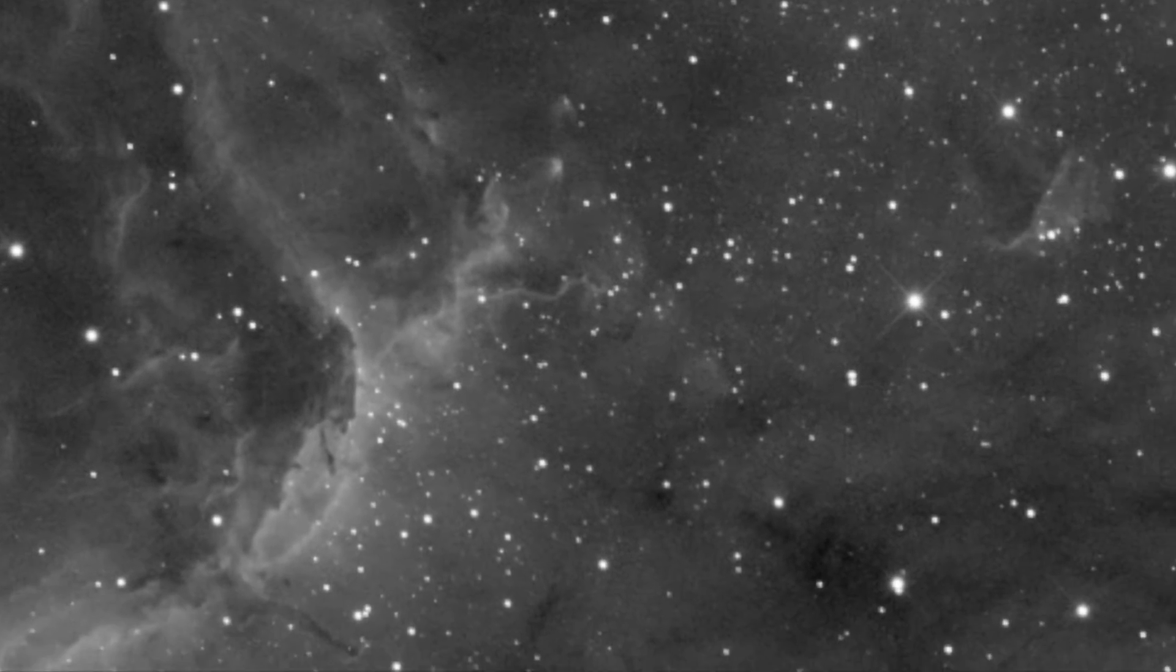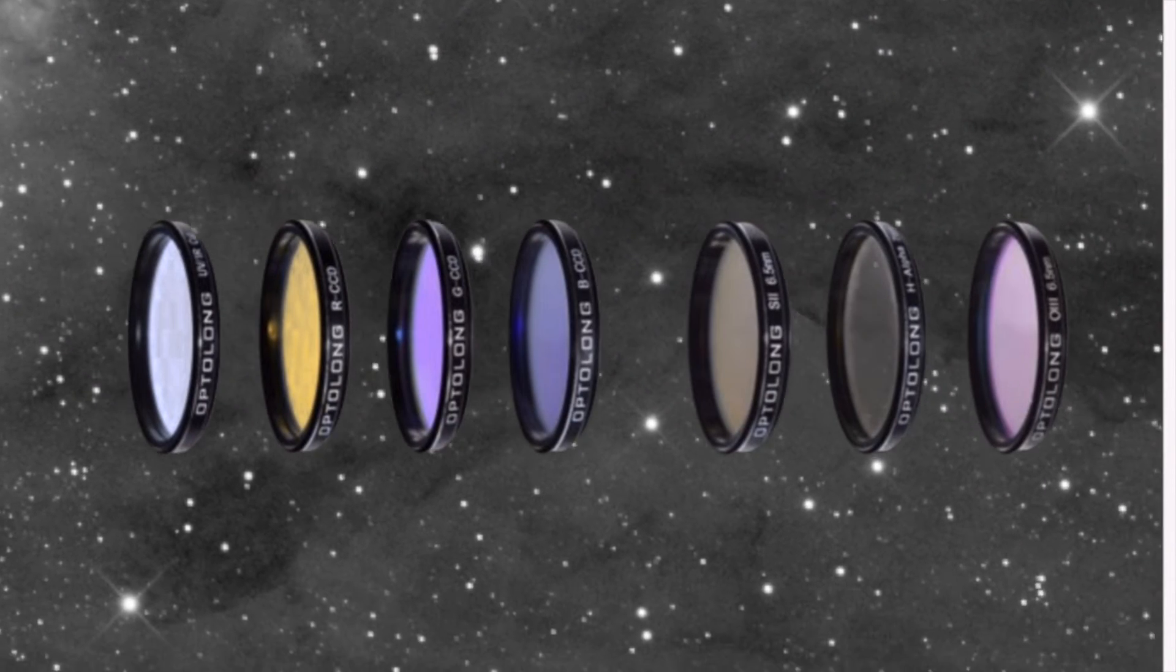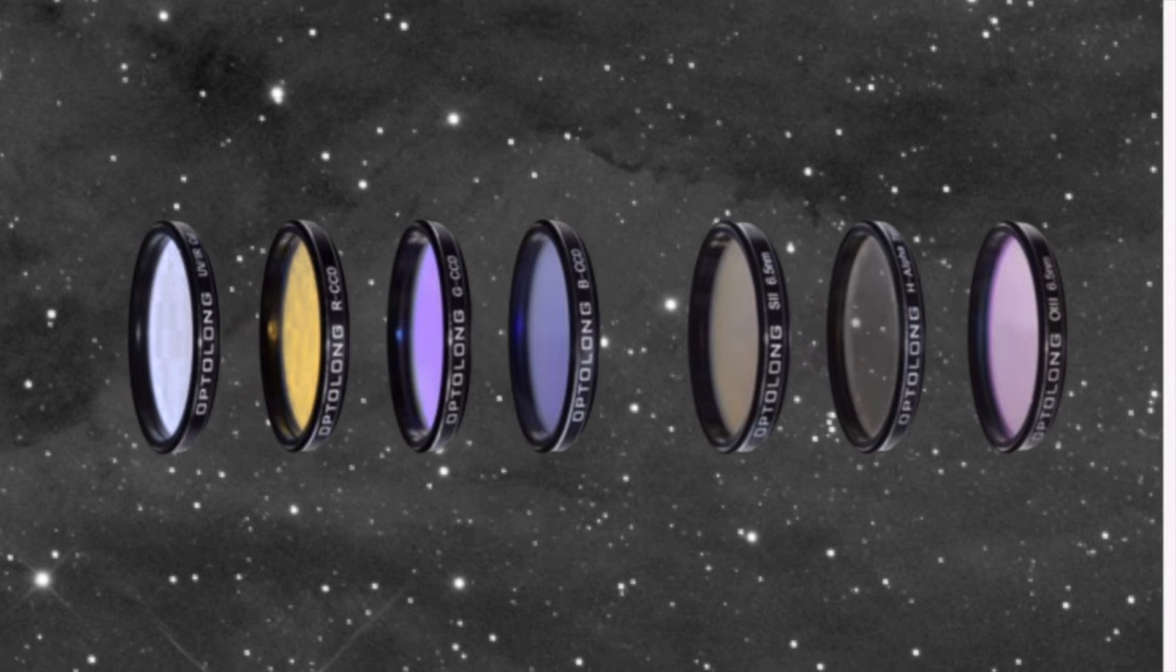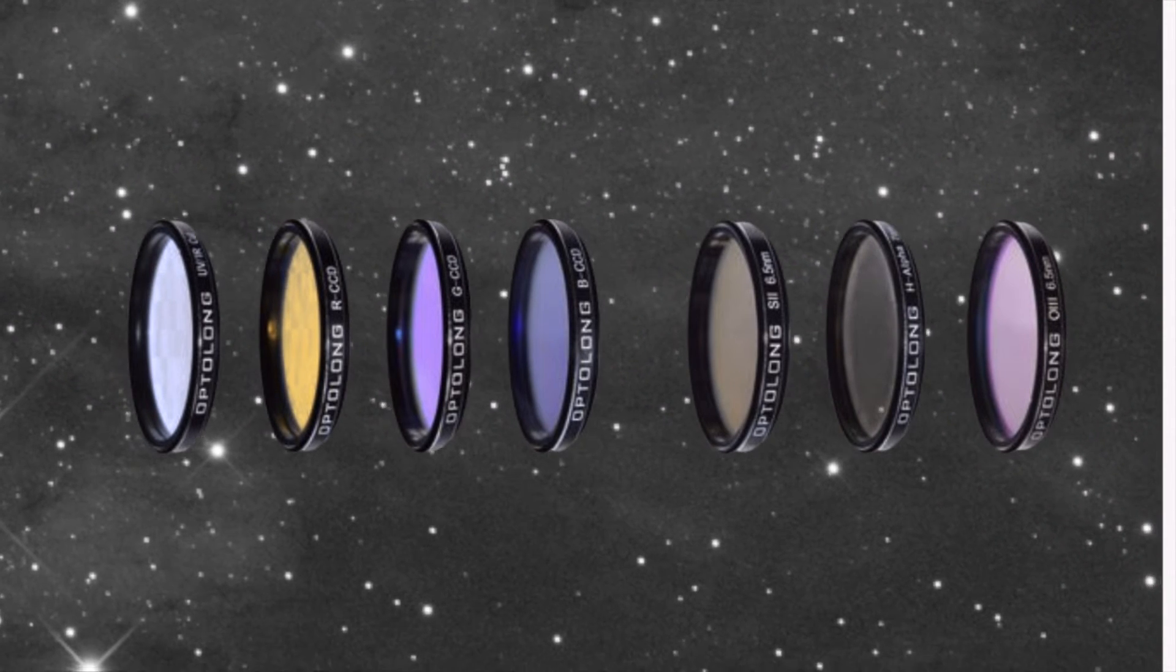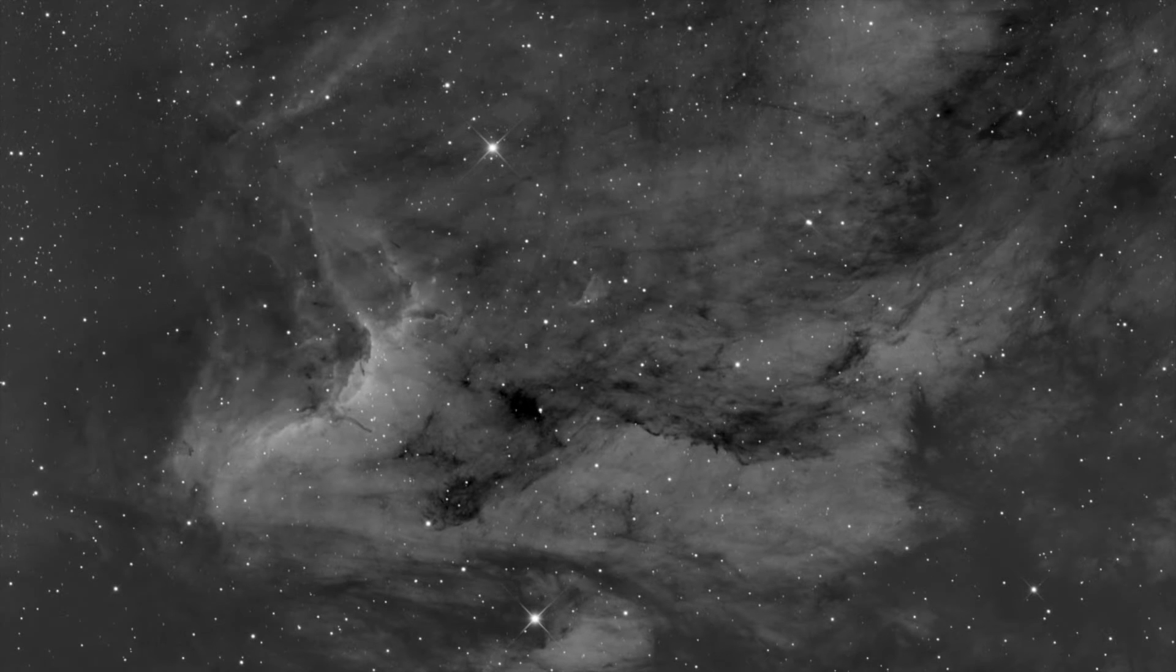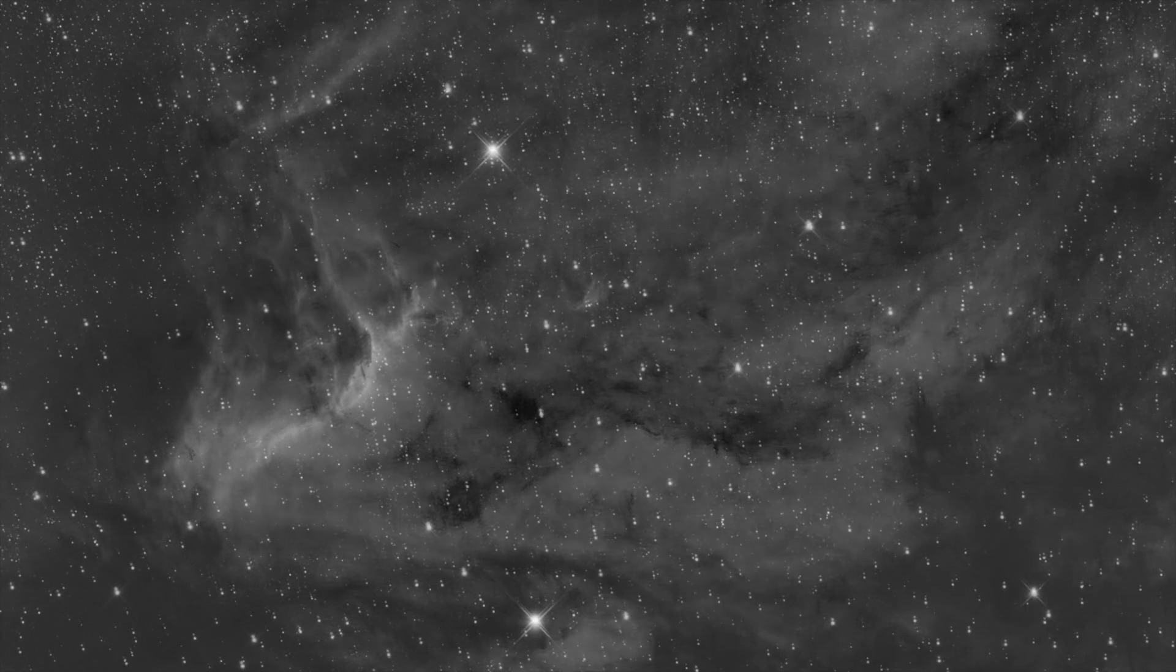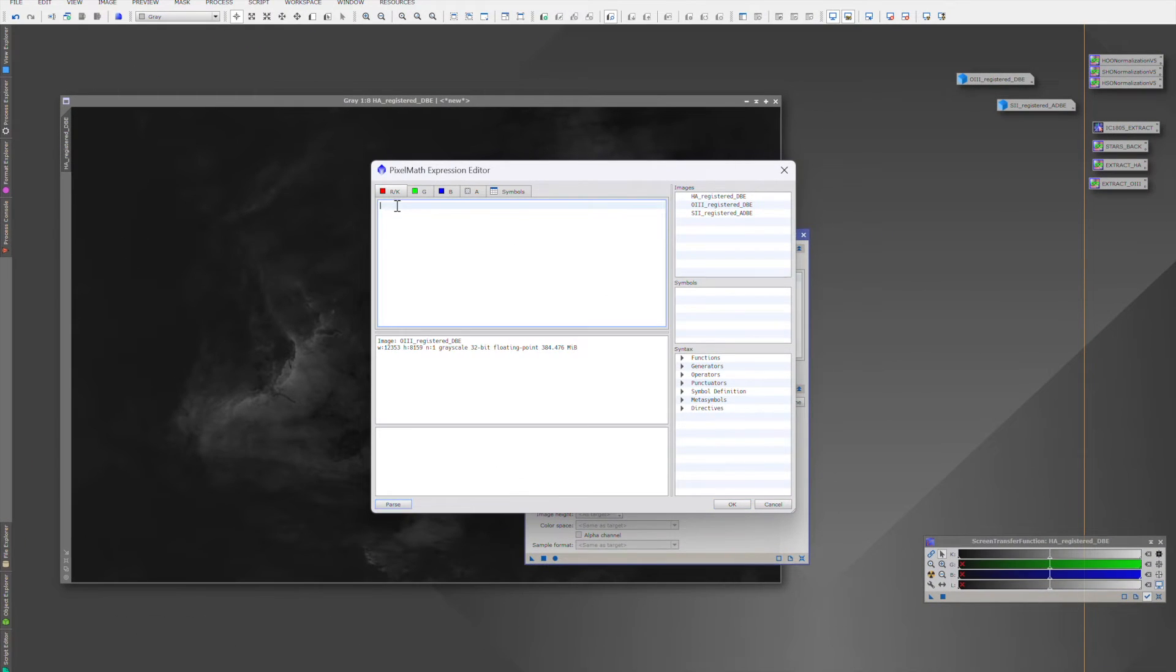They also allow you to have complete control over your image, since you're using separate filters to capture each color, as well as capturing narrowband data through the use of hydrogen alpha, oxygen 3, and sulfur 2 filters. This allows you to have each wavelength of light imaged individually, allowing you control over the integration and how you capture each channel. This also allows you to have complete control over how you process your data. You can build the popular Hubble color palettes from scratch, all while maintaining the quality of the image.